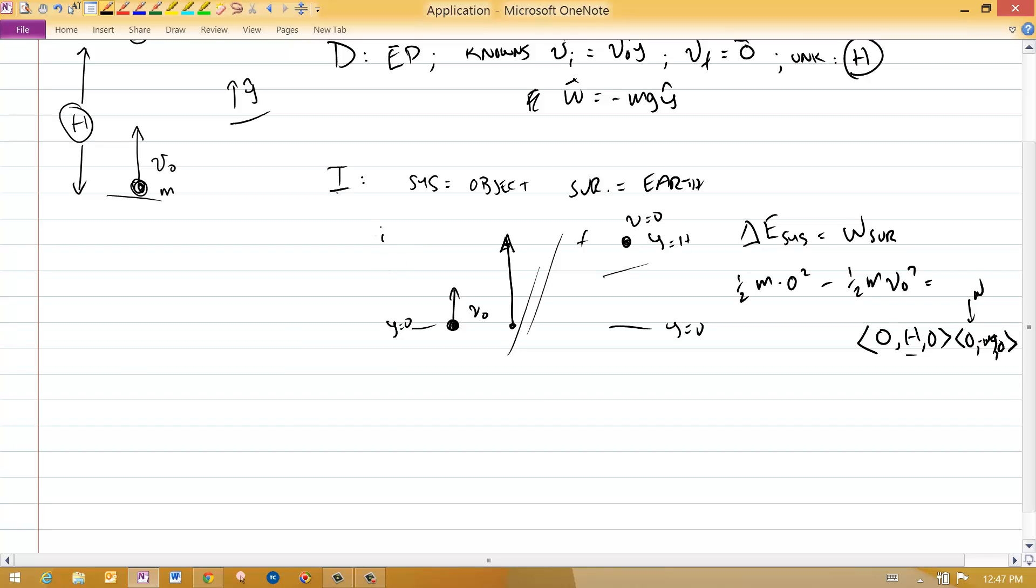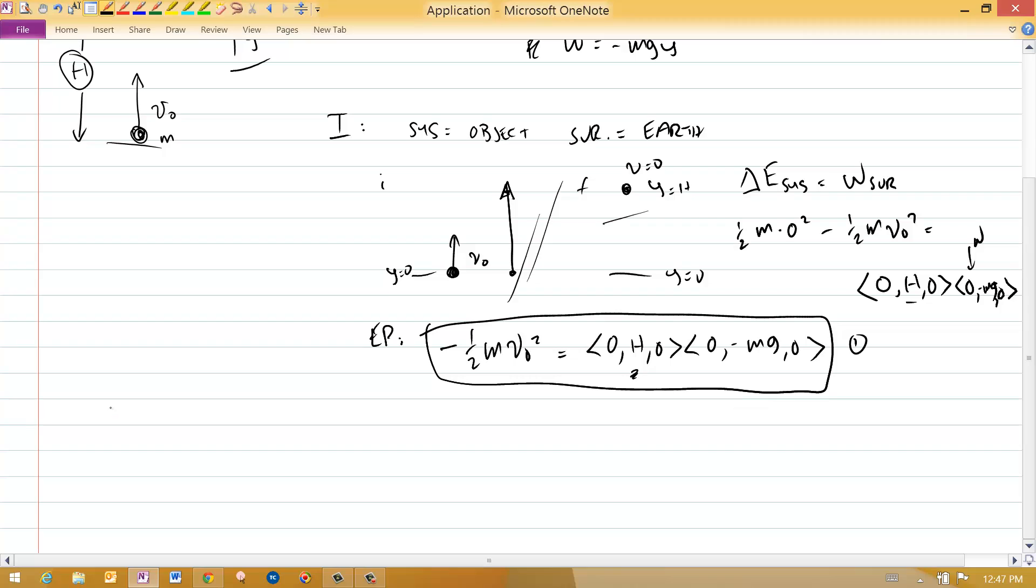The investigator says, my only equation that I'm generating here is from the Energy Principle. I get minus 1 half m v0 squared is equal to 0, h, 0. That's the displacement dotted with the 0 minus mg, 0. There's one equation, notice there's one unknown there. One equation, one unknown, that's the h. So I'm going to be able to solve this, push this off into what the execution person says.